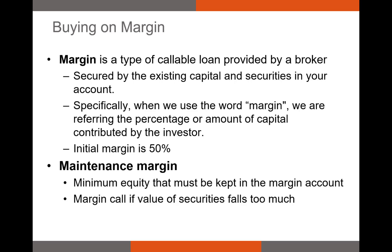The initial minimum amount of margin you can have in your brokerage account is set by the Federal Reserve at 50%. However, over time your minimum margin, also known as your maintenance margin, can be lowered. If the amount of margin you have in your account falls below the maintenance margin, you'll suffer a margin call. This means your broker will require you to add more cash to your account to increase your margin above the maintenance margin, or your broker will start to sell the assets of your portfolio to repay your loan and increase your margin.